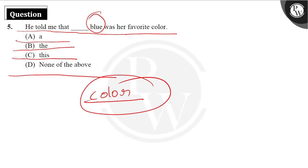We are not giving 'a blue' — we are not talking about something random. 'The' indicates something particular, but we don't get any statement here about which blue particularly. And 'this' — we are not having any evidence to prove which blue we are showing. So in the sentence, the answer is none of the above.